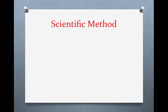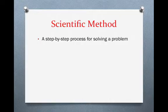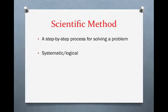So let's start by talking about what the scientific method actually is. Basically, it is a step-by-step process for solving a problem. I want you to notice that nowhere in that definition was the word science, and that means the scientific method can really solve any type of problem that you want. The scientific method is very systematic and very logical — it follows the same process every single time, and it eliminates opportunities for error and for problems down the road. So you're really going to get a good result every time you use it.